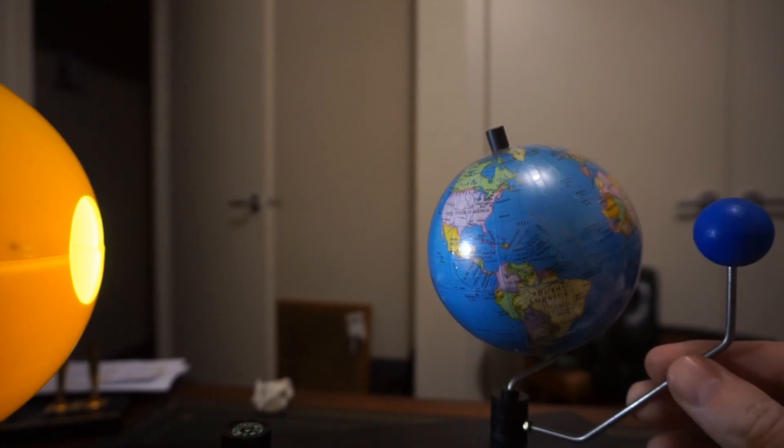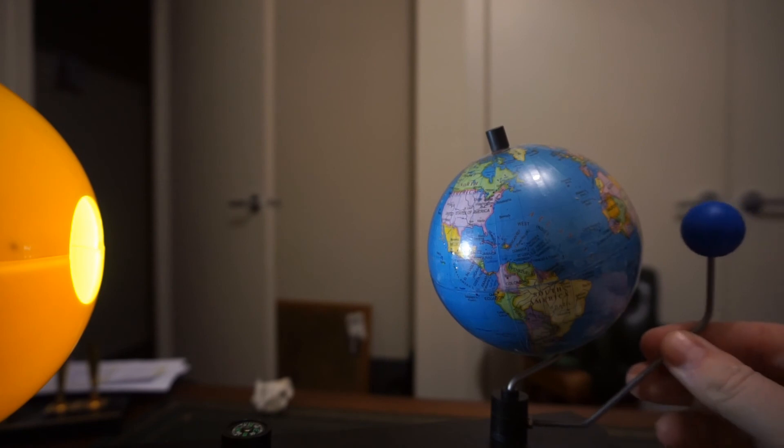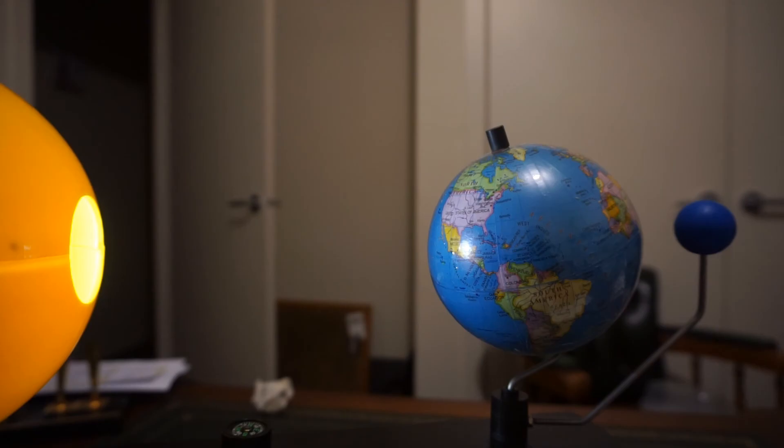When the Moon is directly behind the Earth, and in the Earth's shadow, we call that a lunar eclipse. And we still see a full Moon, but it's a bit darker, and sometimes we see it as a tinge of red. And in that case, we call it a blood Moon.